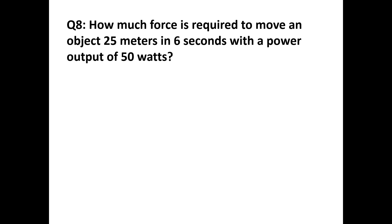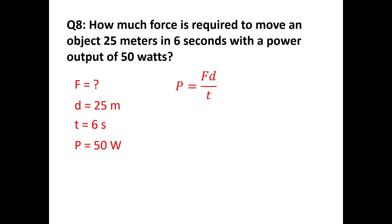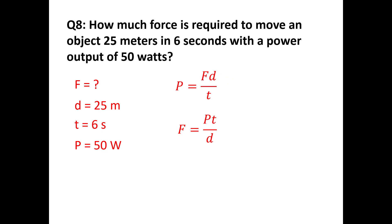How much force is required to move an object 25 meters in 6 seconds with a power output of 50 watts? We need to rearrange P = FD/t for F. Multiply both sides by t and divide by D: F = Pt/D. Plugging in gives F = (50 × 6)/25 = 12 newtons. Using MKS units throughout gives the answer in newtons.